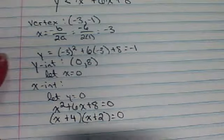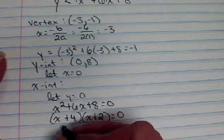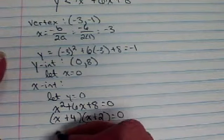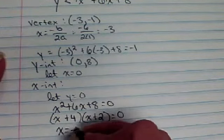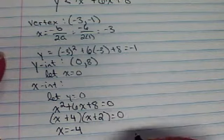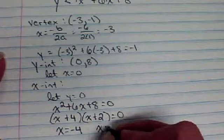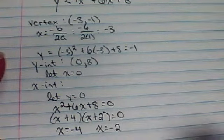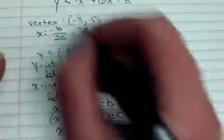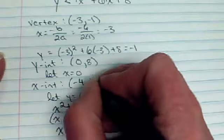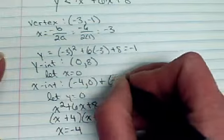So when we set each of the factors equal to 0 to solve them, x plus 4 equals 0 would give me a solution of x equals negative 4. x plus 2 equals 0 would give me a solution of x equals negative 2. So I would have the points negative 4, 0 and negative 2, 0.